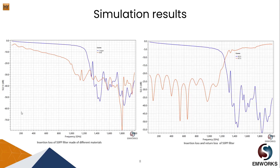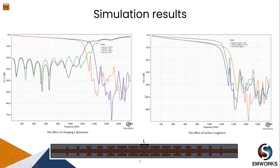Looking at the simulation results in the graph on the right, we can see the SSP filter has a cutoff frequency of almost 730 gigahertz. When we change the material from copper to gold, the cutoff frequency drastically drops from 730 gigahertz to 100 gigahertz. The reason is that gold has less electrical conductivity compared to copper, and as a result more losses are generated.